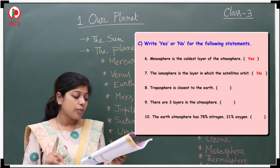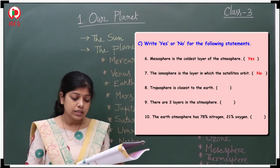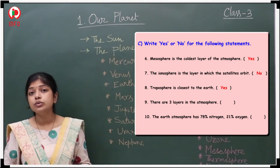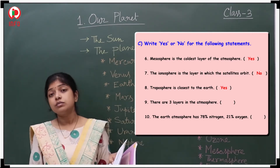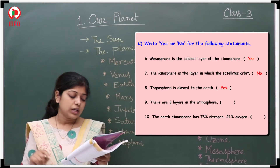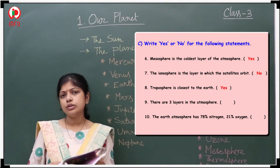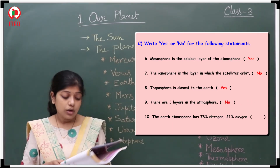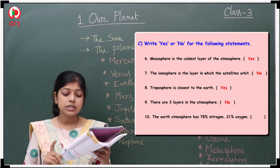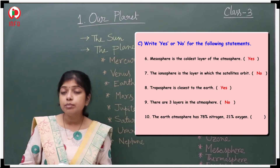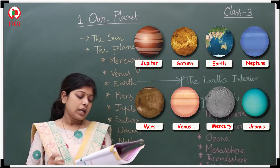Eighth: Troposphere is closest to the Earth — Yes, the troposphere is where we live, sleep, and stay. Ninth: There are three layers in the atmosphere — No, that is not correct. Tenth: The Earth's atmosphere has 78% nitrogen and 21% oxygen — Yes, that information is correct.